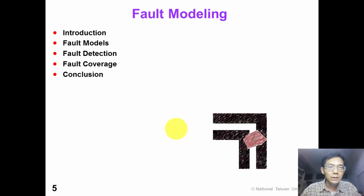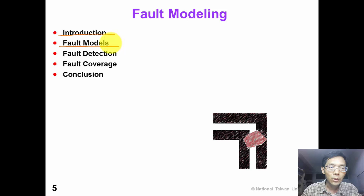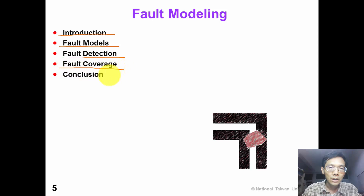This chapter includes five sections. We will first do an introduction, followed by some useful fault models, and then we will introduce fault detection and fault coverage. Then we conclude this chapter.